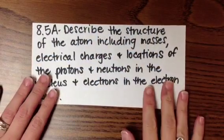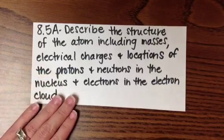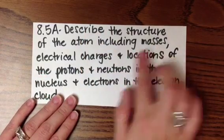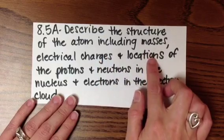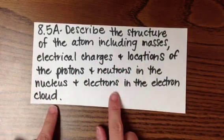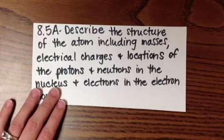Let's start by looking at this very lengthy tech from eighth grade. 8.5 has students describe the structure of an atom including masses, electrical charges, locations of the protons and neutrons in the nucleus, and the electrons in the electron cloud. This has a lot of vocabulary, a lot of content in it. Let's see what it would look like when we break it down.